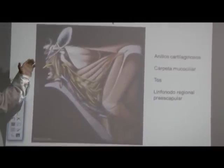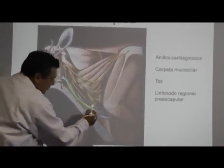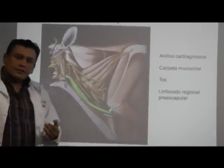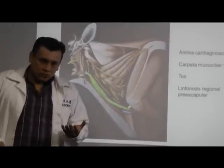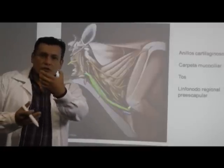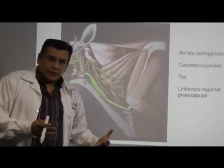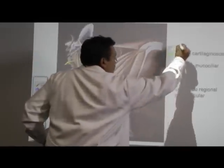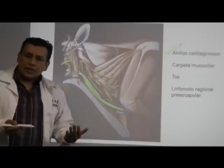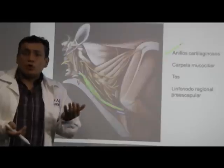Posteriormente continúa ese pasaje respiratorio hacia la tráquea, que estoy señalando con el marcador. Esta tráquea, como ustedes saben, tiene anillos cartilaginosos incompletos. La parte cartilaginosa está ventral a todo individuo y sirve a modo de protección para evitar colapso y que el individuo pueda morir de asfixia. Esta mucosa traqueal también está revestida por una carpeta mucociliar compuesta por células cilíndricas ciliadas, así como células caliciformes productoras de moco.